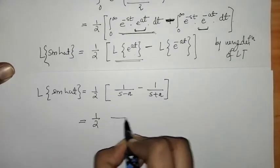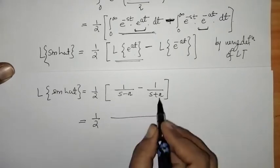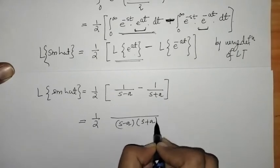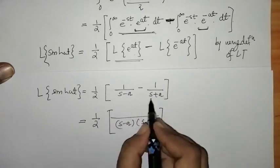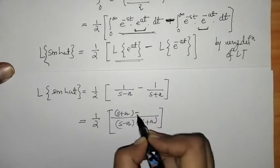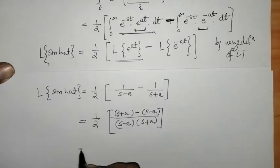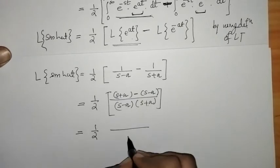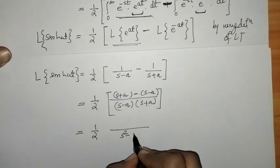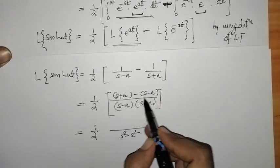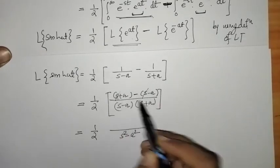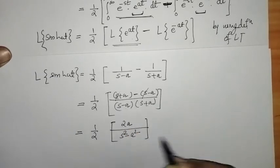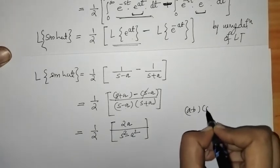Now we can simplify. On doing cross multiplication, in the denominator we have (s minus a)(s plus a), which equals s squared minus a squared. In the numerator, we have s plus a minus s minus a: the s terms cancel and the minus minus gives plus, so we get 2a.